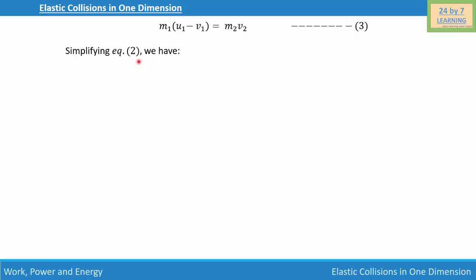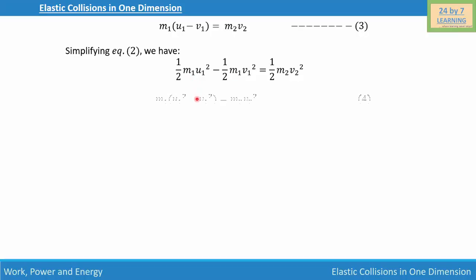Now let's simplify equation 2. We write m1·u1² − m1·v1² = m2·v2². Since ½ is common, we cancel it from both sides. Taking m1 as common on the left hand side, we get m1(u1² − v1²) = m2·v2², and this is our equation number 4.